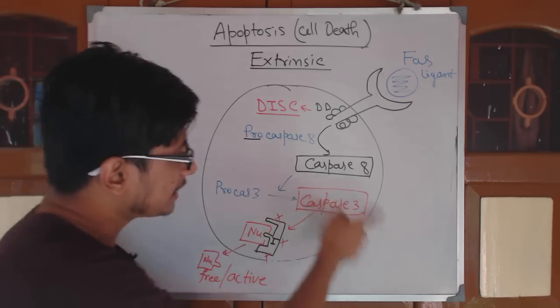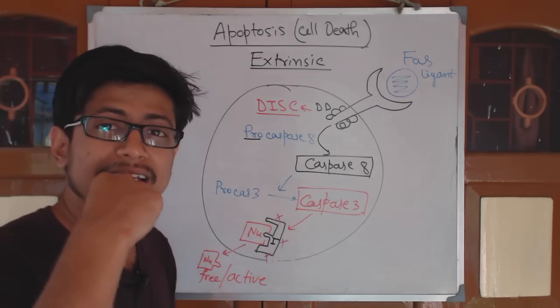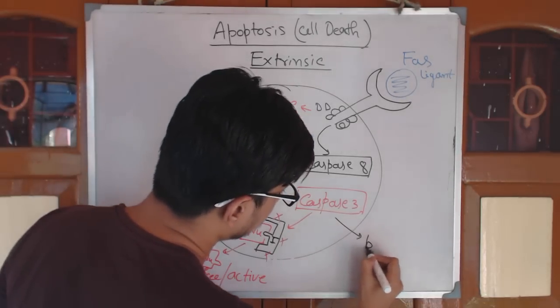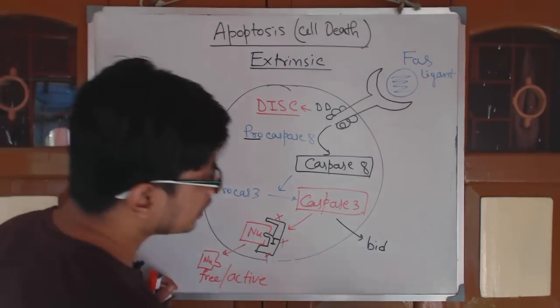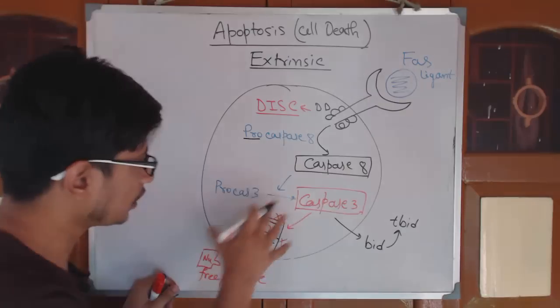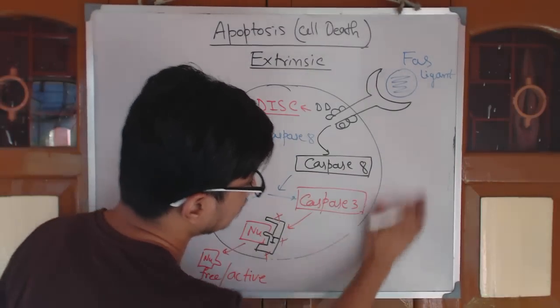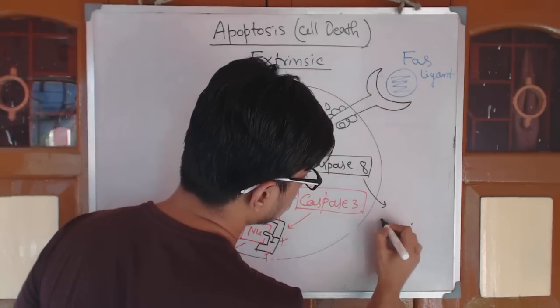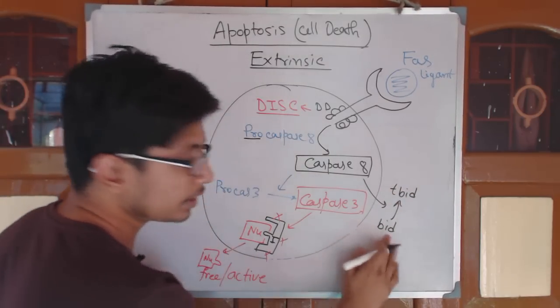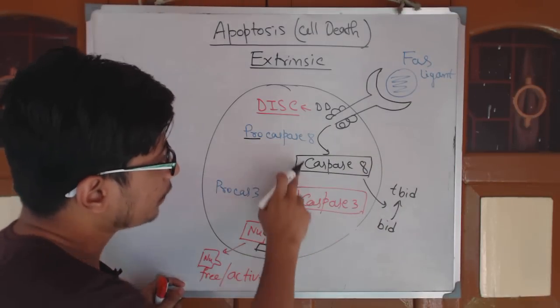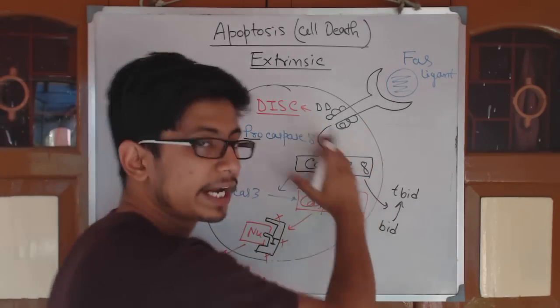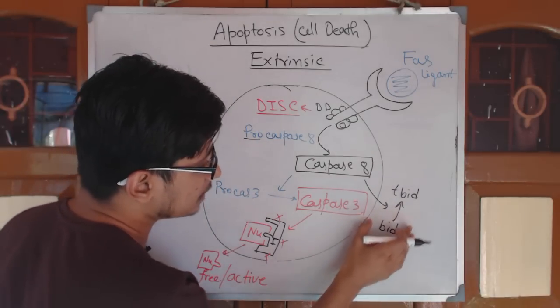This is the extrinsic pathway signaling. But on the other hand, caspase 8 can cross-talk with the intrinsic pathway. How? Caspase 8 will activate BID, a protein called BID. Once activated, BID is turned into TBID. Just like the other activation of caspases, caspase 8 activates BID protein into TBID. BID is a protein in inactive form; once it's active, we call it TBID. Caspase 8, remember, is very important because it mediates the extrinsic pathway and also interacts with the intrinsic one.